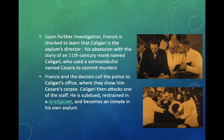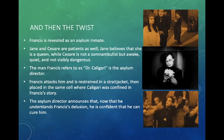We think the story ends there — but then comes the twist. Francis is actually revealed to be an asylum inmate himself. Both Jane and Césaire are also patients there; Jane believes she is a queen. Césaire is not a somnambulist but awake, quiet, and not visibly dangerous. The man Francis called Dr. Caligari is actually the real asylum director. Francis attacks him and is restrained in a straitjacket. In the end, the director announces he now understands Francis' delusion and is confident he can cure him.